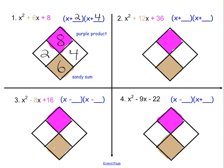Moving on to the second problem, our purple product is 36 and our sandy sum is 12. Looking for two numbers that multiply to 36 that add up to 12. Let's see, 6 and 6. So that would make x plus 6 times x plus 6. Now that is a special product that we could rewrite as x plus 6 quantity squared, a perfect square.